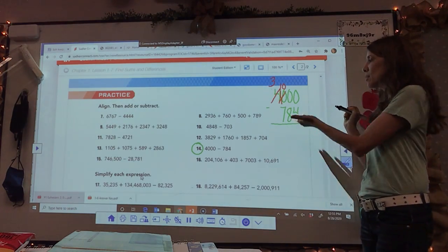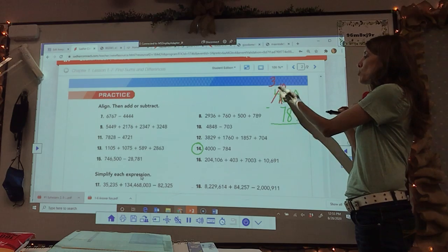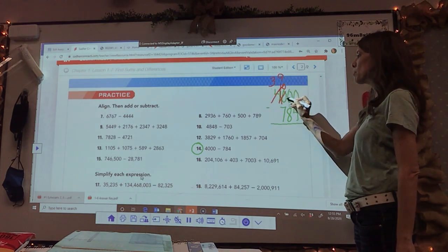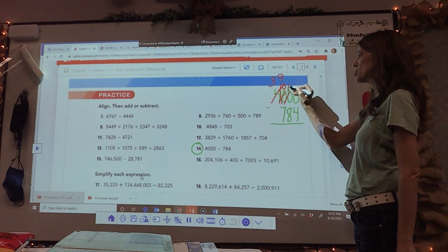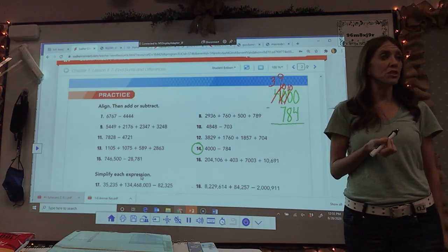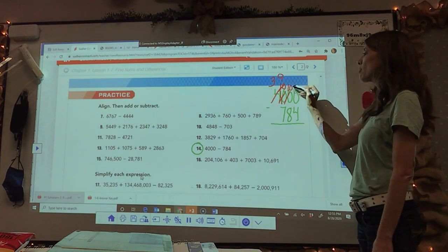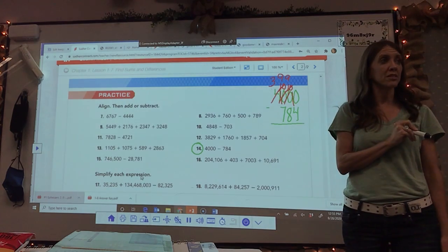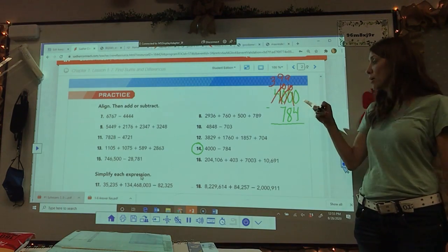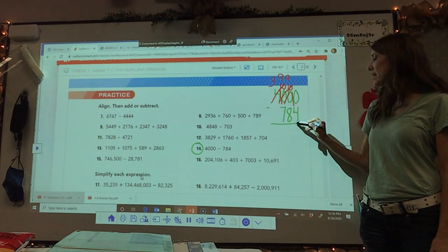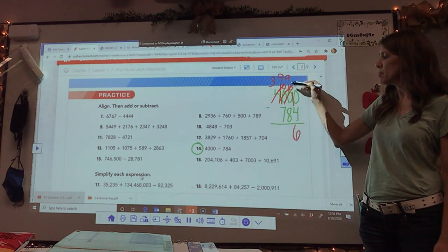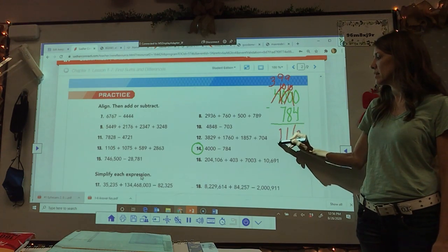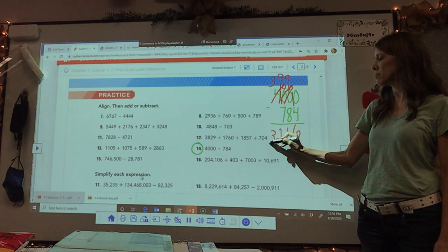No, it didn't. We're still trying to do this over here. So what do we need to do? We need to go over and we need to borrow from the 10 and the 10 becomes a nine. And we put the 10 right here, right? So this changes to a 10. Does that help our situation? No. So we need to borrow from the 10 and it becomes a nine. Now this becomes a 10. Did that help our situation? Yes. Now it comes down.